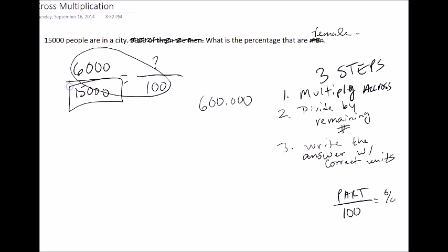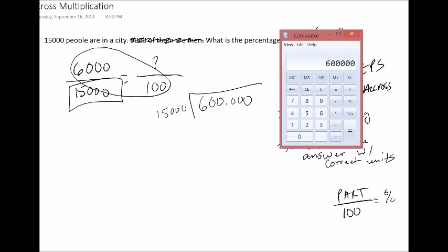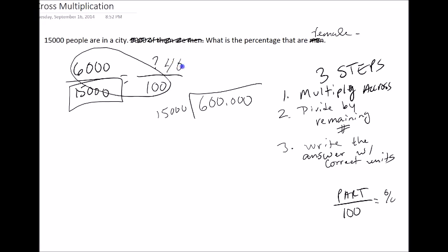So 600,000 divided by 15,000. Here's your calculator again. And we have 40, which is our answer. So now we have 40 over 100 or 40%.